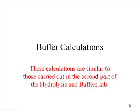I'm going to go through a series of calculations similar to those in the second part of the hydrolysis and buffer lab. What we're going to do is start by making a buffer solution. To make this buffer solution, we're going to mix a solution of weak acid with another solution of a strong base. Then we're going to divide that buffer solution into parts and do something different with each part.